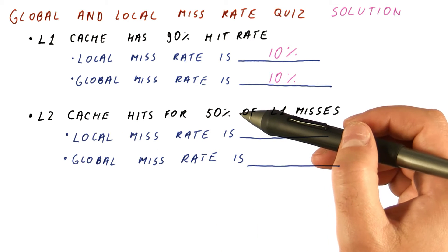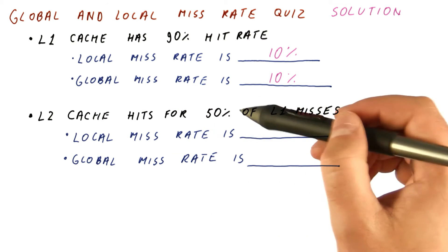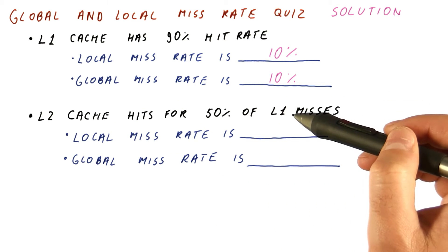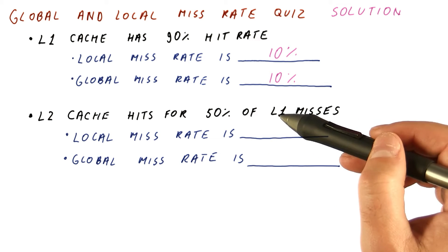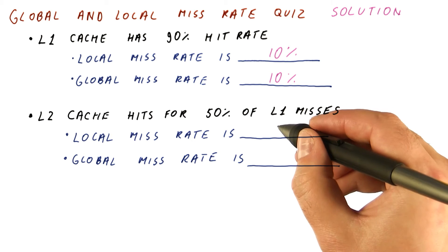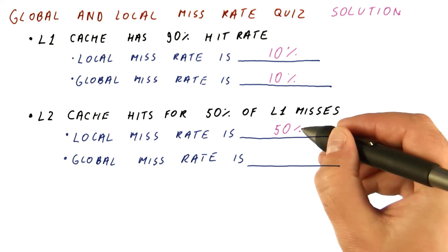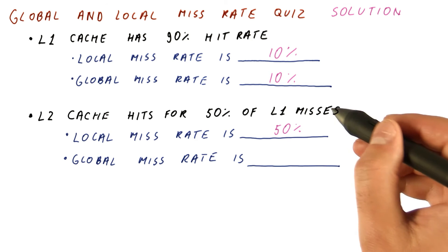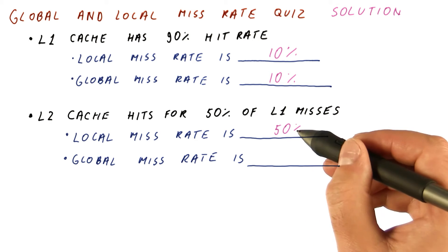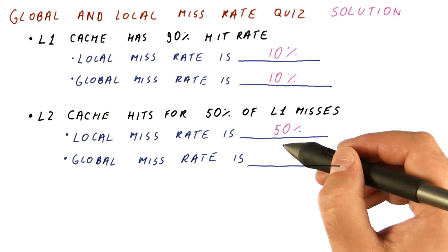For a level two cache, things are different. It hits for 50% of L1 misses. That means that it misses for half of the L1 misses. So its local miss rate is 50%. Of all the things that reach this cache, and those are only L1 misses, half of them hit and half of them miss.